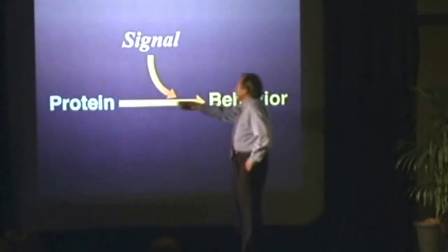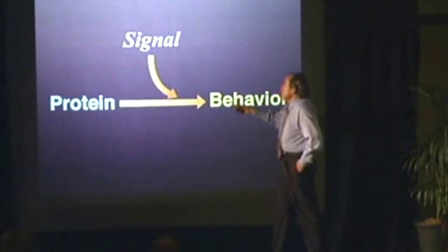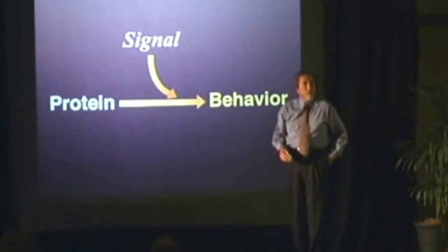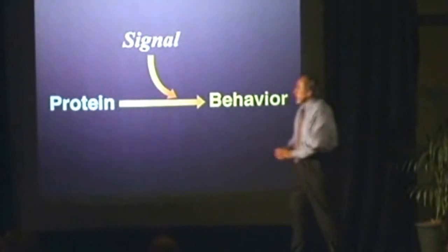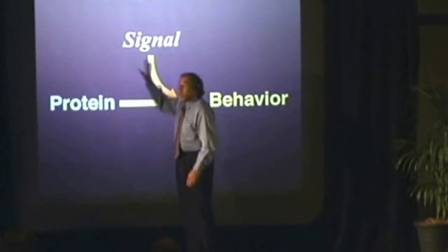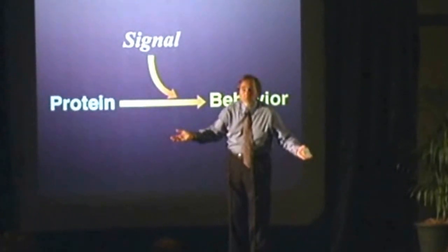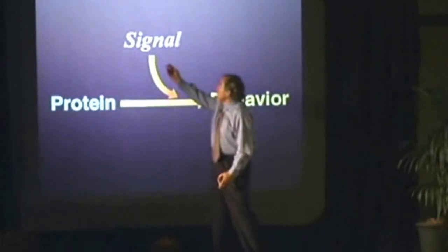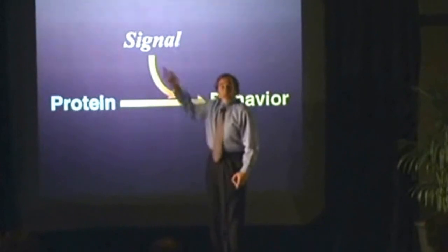Your behavior represents the action of a protein that interacts with a signal — the signal activates the protein to move, and the movement generates behavior. If I have just the protein and no signal, nothing happens. So action is really controlled by controlling the signal. The brain of the cell is the structure that controls the signals to tell the cell what to do in response to the environment.